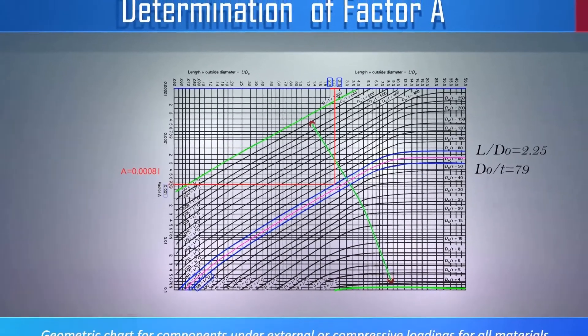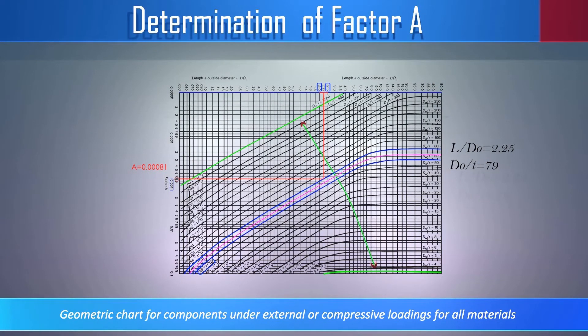And we have to move the decimal position 4 digits to the left side. So the value of factor A is 0.0081.